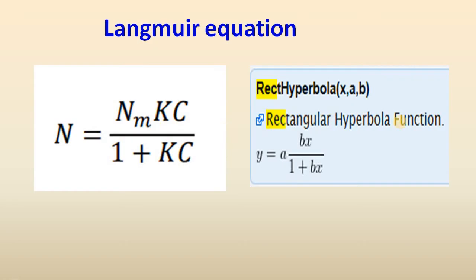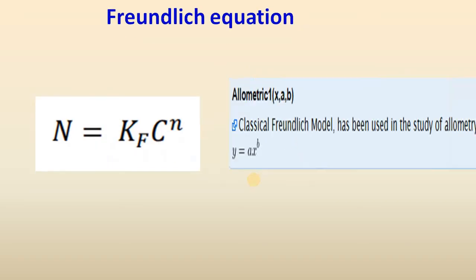Then comes the Freundlich equation. The Freundlich equation is used for the formation of a monolayer onto a heterogeneous surface. The classical form of the Freundlich equation can be written as: n = kf · c^n, where n is the amount adsorbed, kf is a constant, c is the equilibrium concentration, and n is the linearity constant.